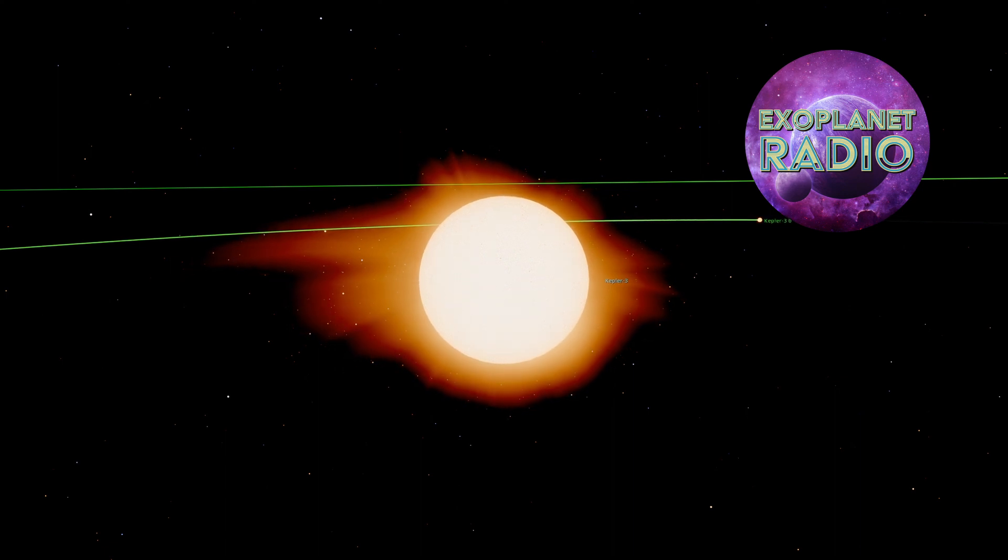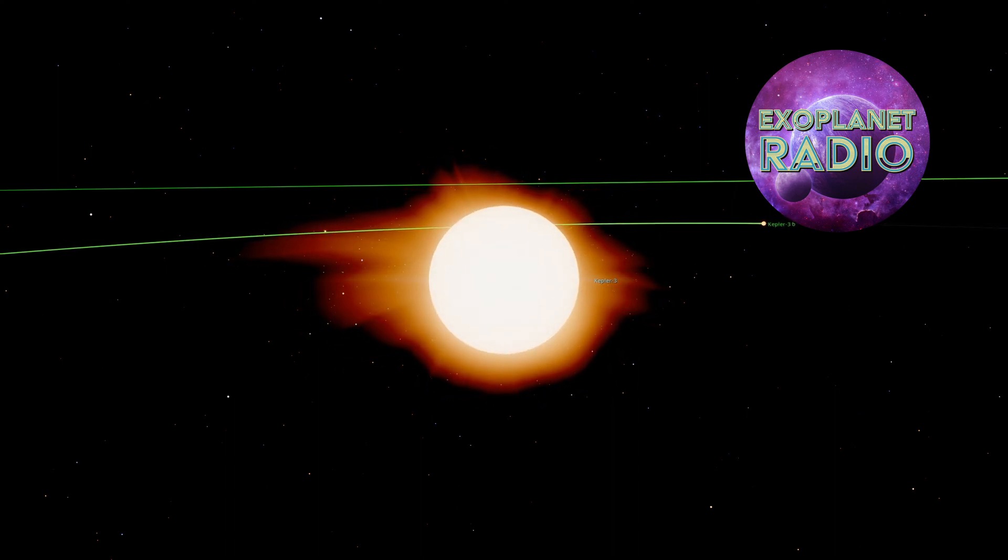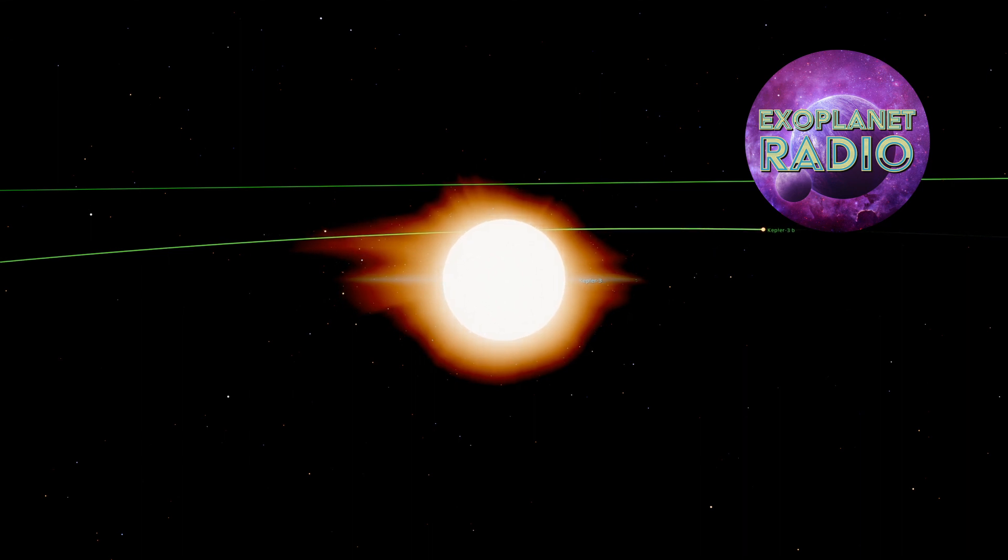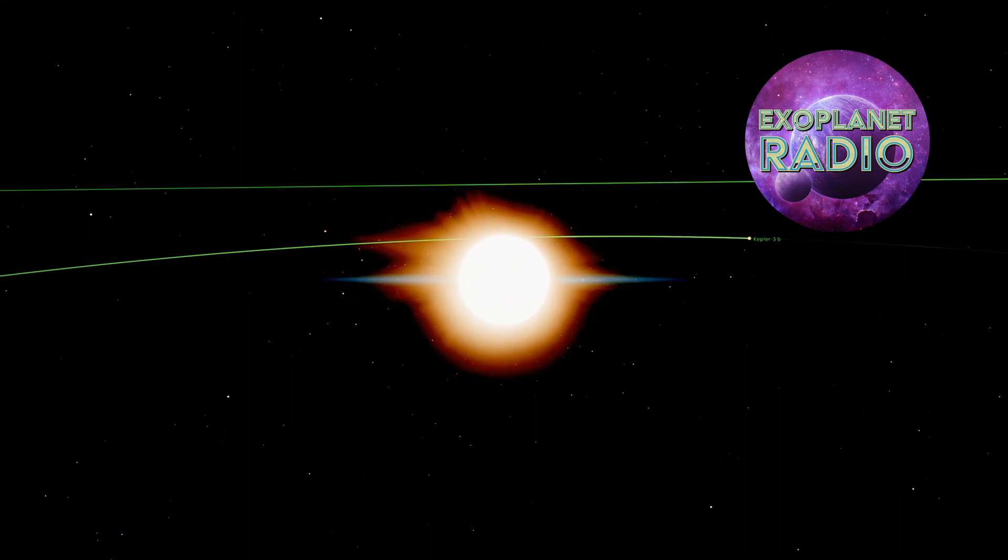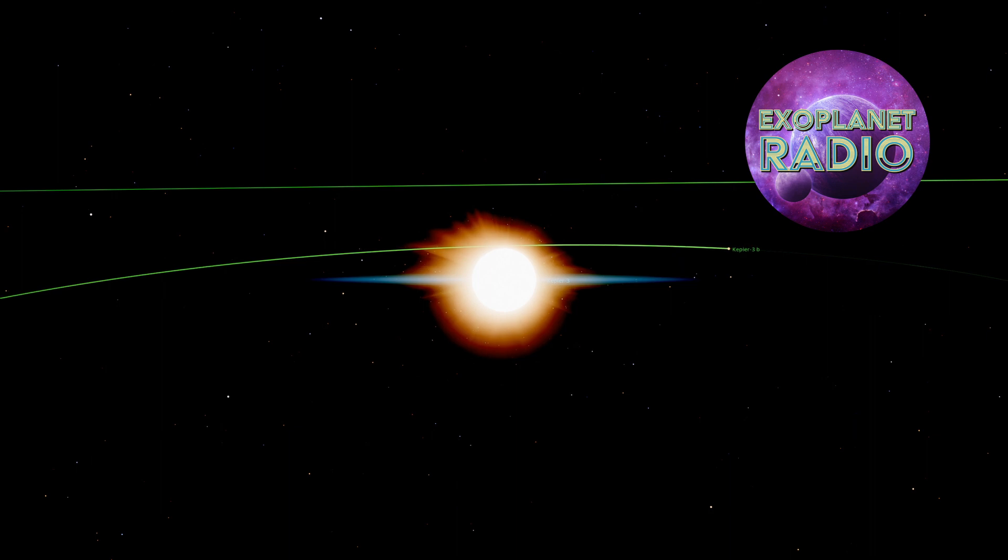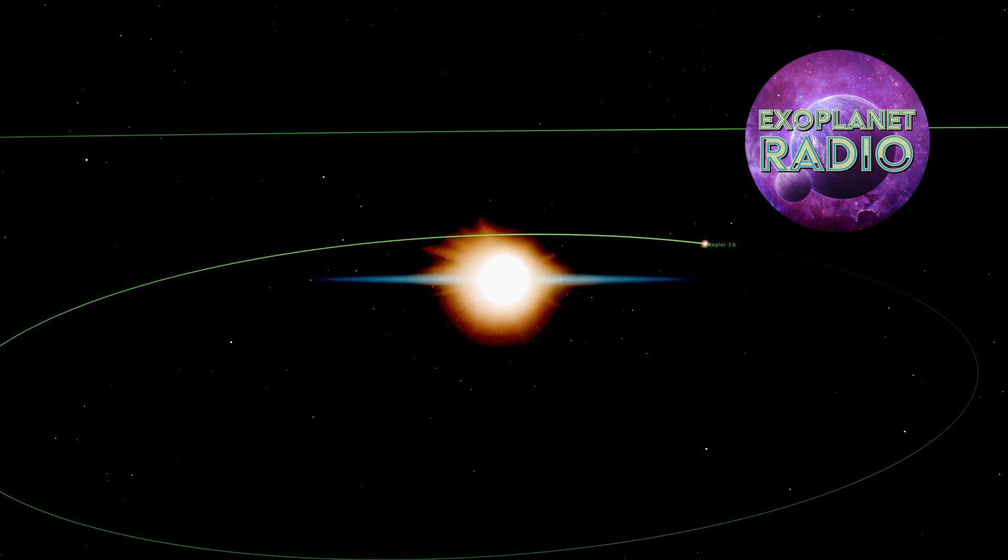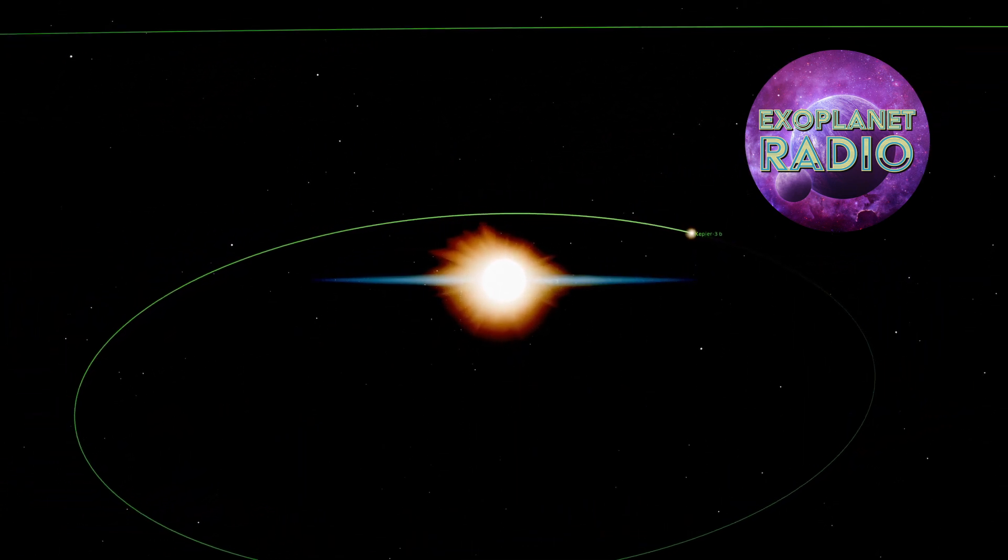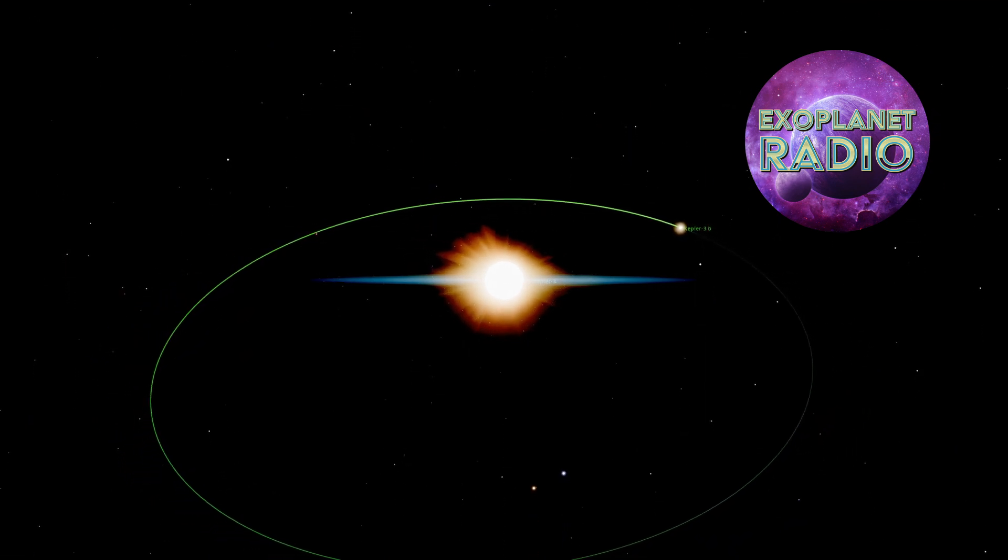Exoplanet secondary eclipses are brightest in the infrared, and while astronomers have been able to tease out secondary eclipses from data archives of the Kepler and TESS space telescopes, with the deployment of the James Webb Space Telescope, which is specifically designed to look in the infrared, astronomers should begin to get more characteristics from exoplanets from their secondary eclipses.